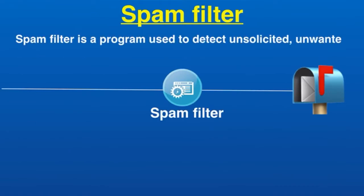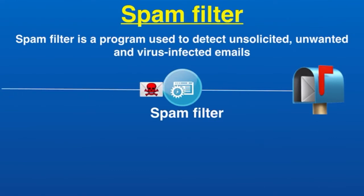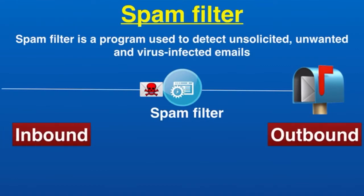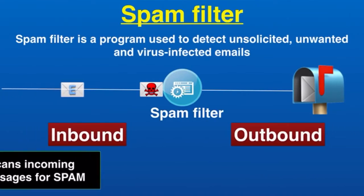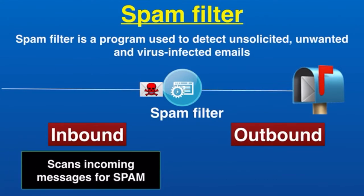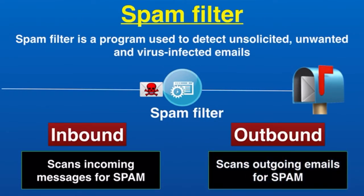To do this, spam filters are used to detect unsolicited, unwanted, and virus-infected emails — called spam — and prevent those messages from getting to a user's inbox. Spam filters are applied to both inbound and outbound emails. Inbound spam filters scan incoming messages for spam, malware, suspicious links, and attachments. Outbound spam filters scan outgoing emails and ensure that no spam, malicious content, or sensitive data leaves the network unauthorized.